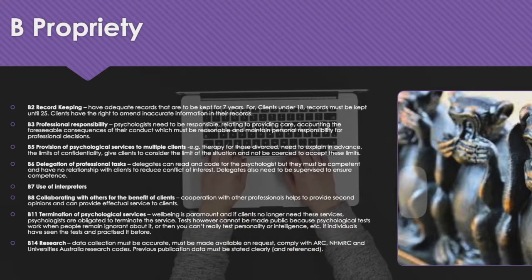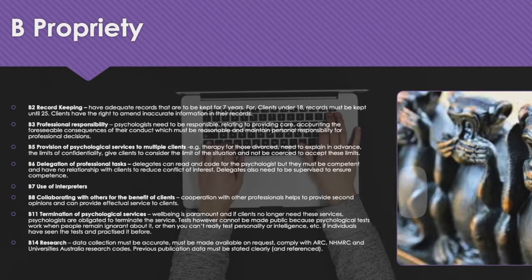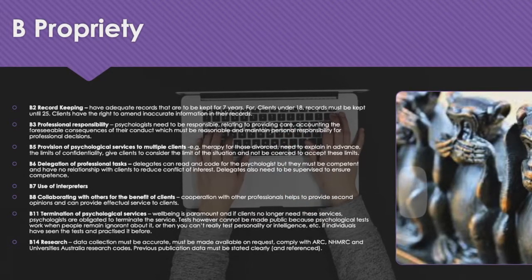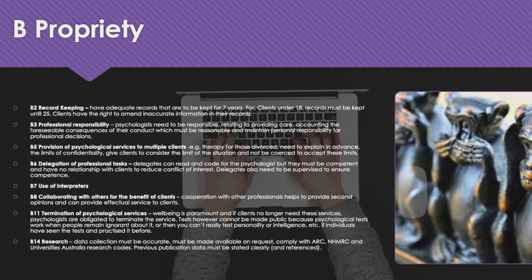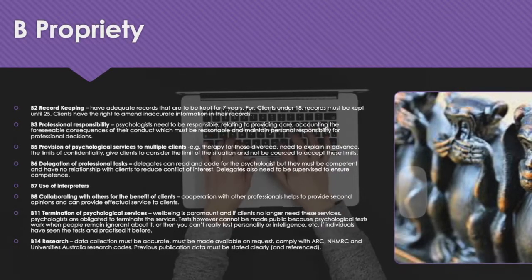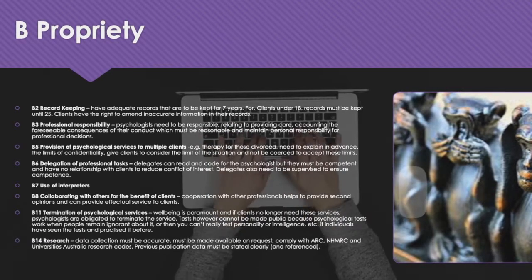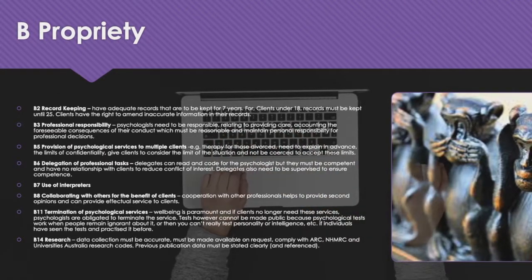B is Propriety. B2 is about Record Keeping — psychologists must have adequate records that are to be kept for seven years. For clients under 18, records must be kept until the client turns 25. Clients have the right to amend inaccurate information in their records. B3 is Professional Responsibility — psychologists need to be responsible in dealing with their services, relating to providing care, accounting for foreseeable consequences of their conduct, and maintaining personal responsibility for professional decisions.